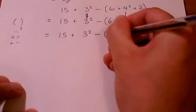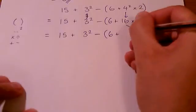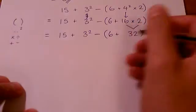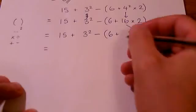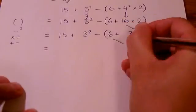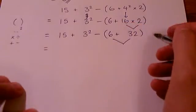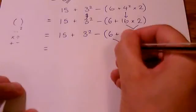So, bring those together. 6 plus 16 times 2 is 32. Now, we've still got brackets here. We can do that.